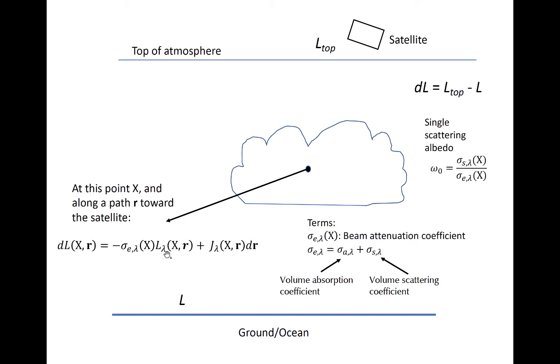L sub lambda here represents the initial radiance at point X in direction r. Sigma E represents the volume extinction coefficient at the point, which is the sum of the absorption and scattering coefficients. Each of these coefficients has units of inverse length.